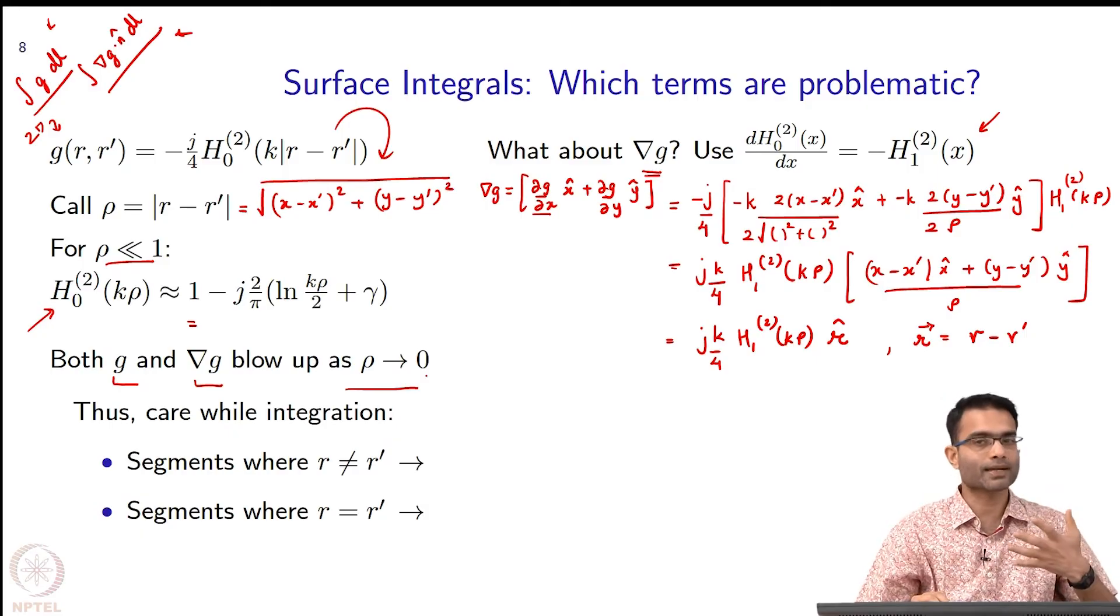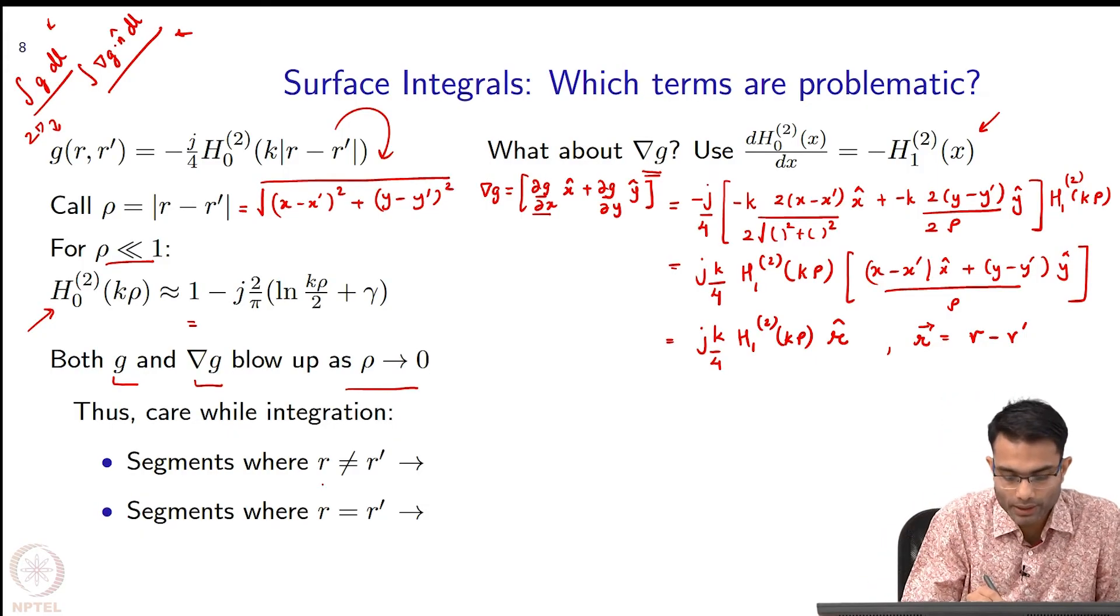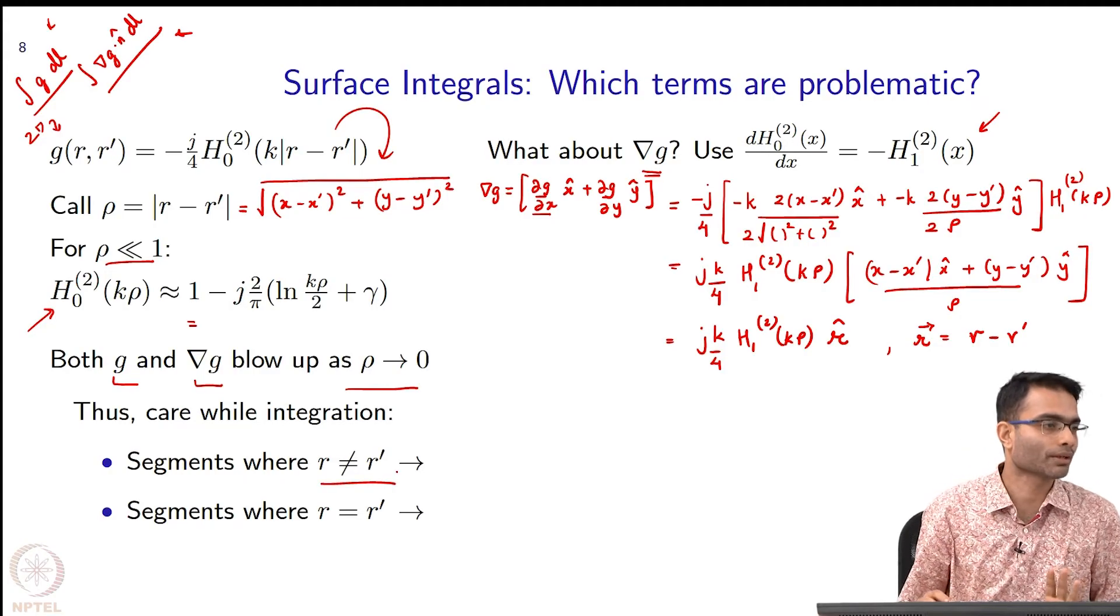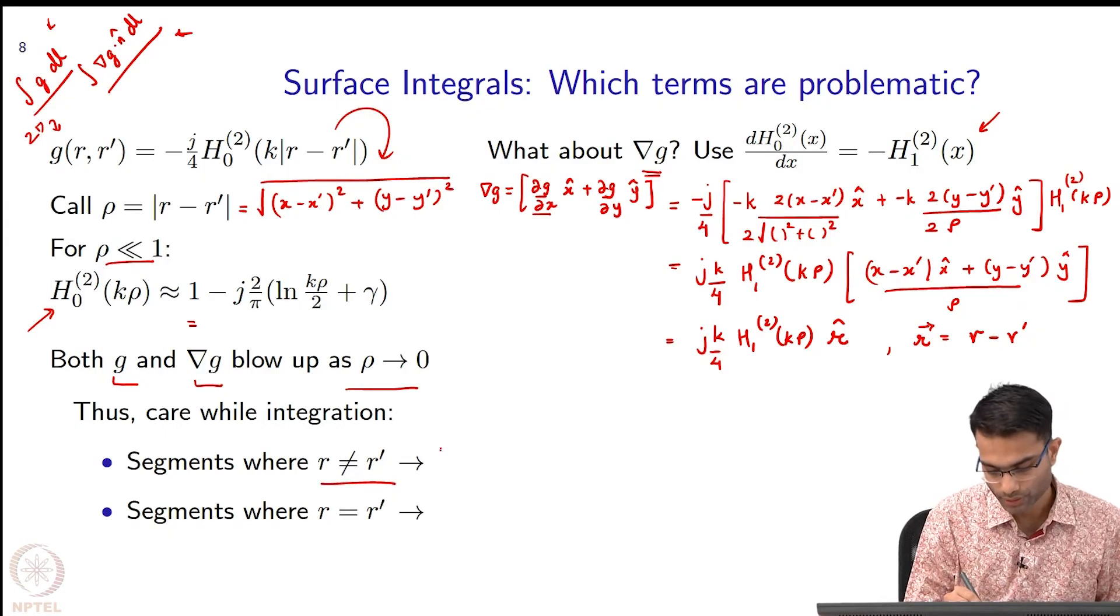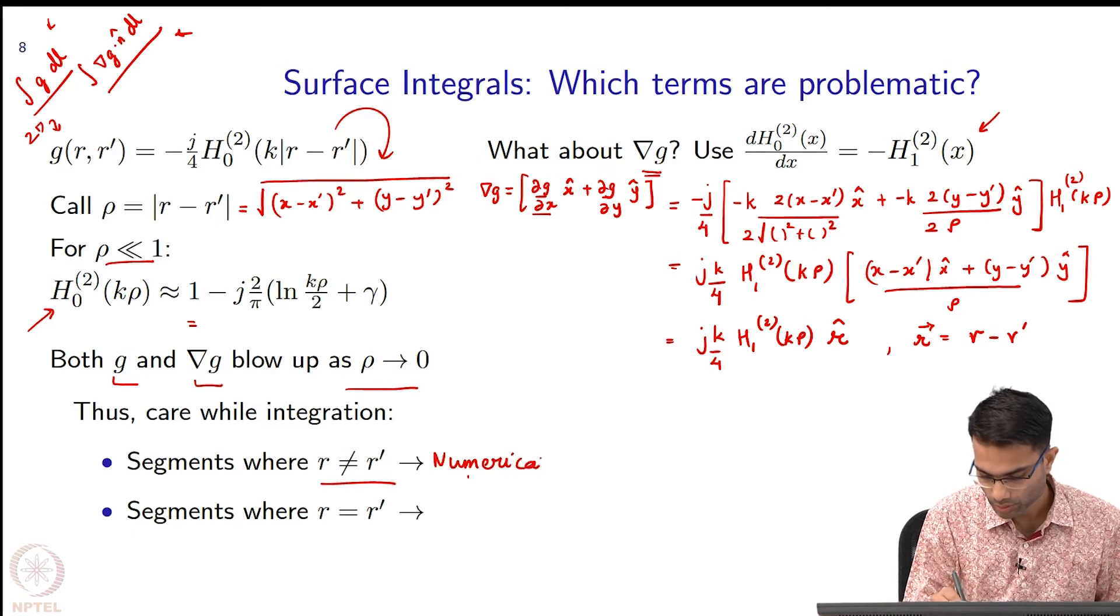Both G and grad G, they blow up as rho tends to 0. Therefore, in our integration strategy we have to use two different techniques. When r is not equal to r prime, that is the happy case, there is nothing to worry about there. I simply use numerical quadrature.